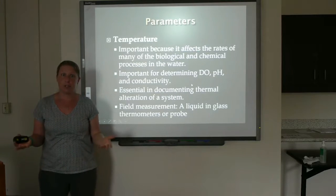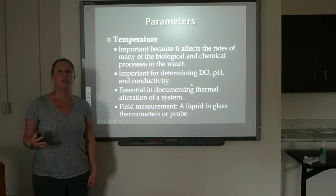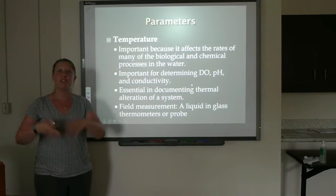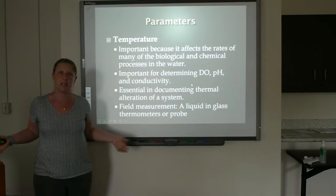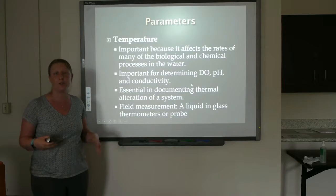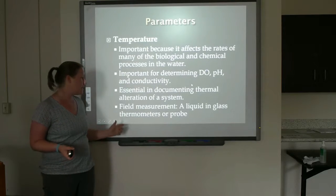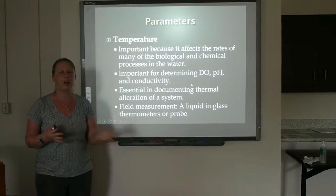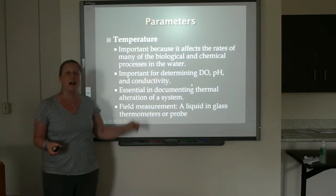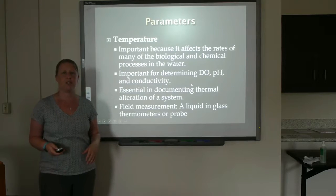Right now, thermal alteration of aquatic systems is a pretty important environmental issue, where we have warm water discharging from industrial applications or where we've removed shading — where we've removed the riparian corridor. Thermal alteration ends up being a pretty important actual type of pollution. In the field, you can use a liquid-in-glass thermometer, or temperature is built into almost all of the probes that we use. We do not recommend using a mercury-in-glass thermometer in the aquatic environment — the potential for contamination is far too high.